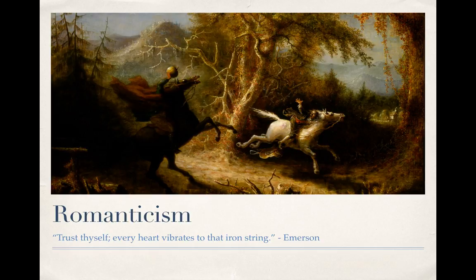Today we are learning about our new unit — Romanticism — and we're going to be studying Washington Irving. The quote I have here for Romanticism is a quote by Emerson: 'Trust thyself, every heart vibrates to that iron string.' We'll talk more about Emerson when I introduce the Transcendentalists, but that's a really good quote to go with some of the big ideas of Romantic literature.